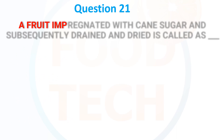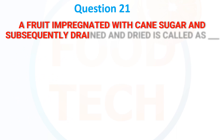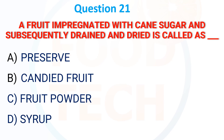A fruit impregnated with concentrated sugar and subsequently dried is called: A) Preserve, B) Candied Fruit, C) Fruit Powder, D) Shrub. The answer is Candied Fruit.